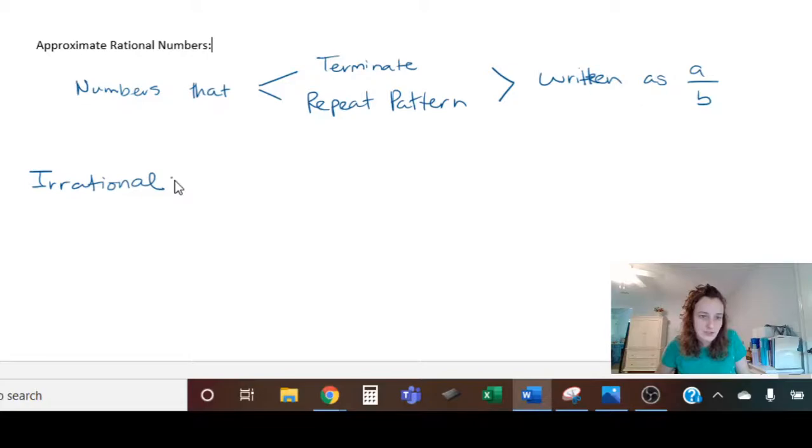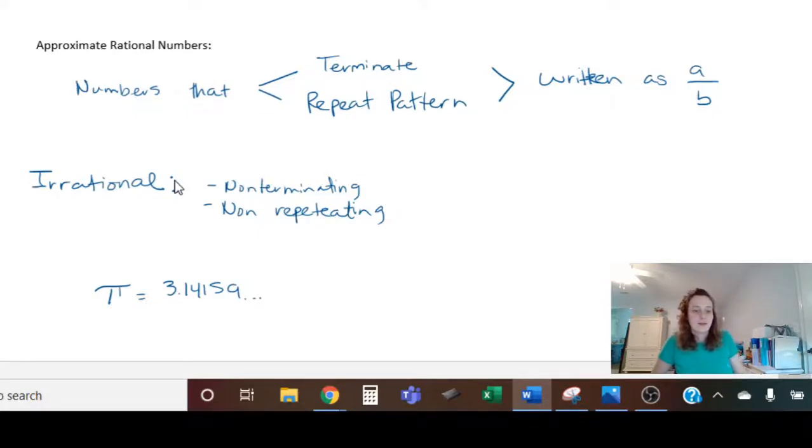And so that means that if it's irrational, it has to be one of two things. It has to be non-terminating, which means it never ends, and it has to be non-repeating. So some examples of these - the most famous one of course is pi. If you type pi in, then you'll get 3.14159 dot dot dot, going on forever. And any square root that's not a perfect square is also an irrational number.